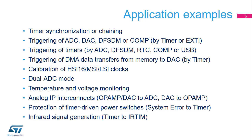Timers can also be triggered based on a comparator output value or when a USB start of frame is detected, triggering a DMA data transfer from memory to the DAC by a timer to allow a frequency-controlled conversion. Calibrating HSI-16, MSI, or LSI clocks — for example, measuring the external oscillator LSE frequency by a timer clocked by the calibrated internal oscillator — and dual ADC mode, using ADC-1 as the master to trigger the start of a conversion for the ADC-2 slave.